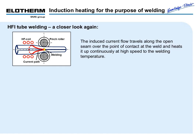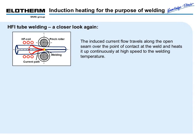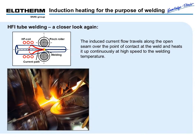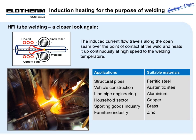The induced current flow travels along the open seam over the point of contact at the weld and heats it up continuously at high speed to the welding temperature. These structural pipes are applied in machine and vehicle construction, line pipe engineering, home appliances and sporting goods, as well as in the furniture industry. Suitable materials are ferritic and austenitic steel, aluminum, copper, brass, and zinc.